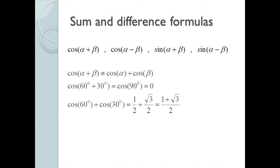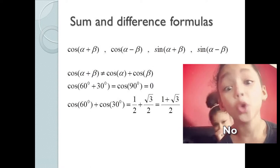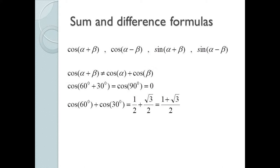As you can see below, trig functions do not distribute across angles. For instance, cosine of 60 plus 30 equals the cosine of 90, which is 0. However, the cosine of 60 plus the cosine of 30 is 1 plus the square root of 3 over 2. So the cosine of (60 + 30) is not equal to the cosine of 60 plus the cosine of 30.